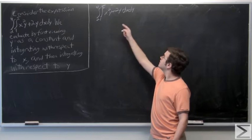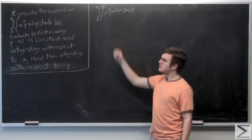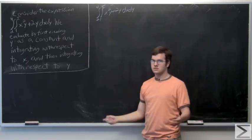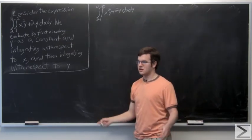x squared y plus 2y with respect to x. And we will treat y as some sort of constant, such as 1 or 2. It's just a constant like that.